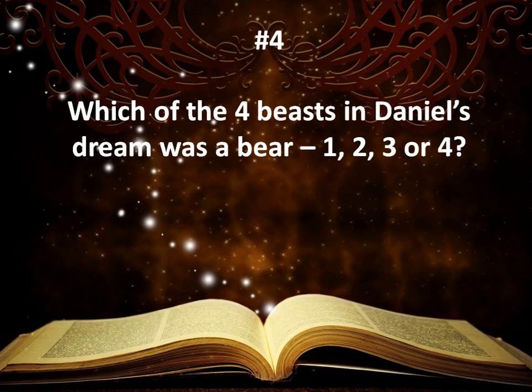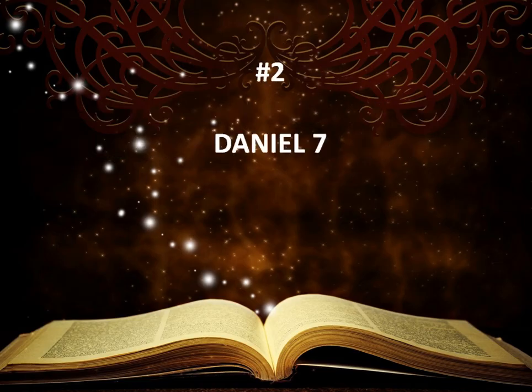Number four: Which of the four beasts in Daniel's dream was a bear — was it the first, second, third, or fourth? The answer is number two, or the second, which would have been the Persian-Mede Empire. You can find that in Daniel 7.